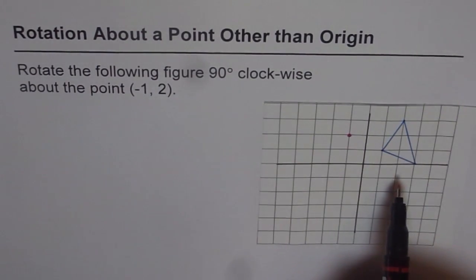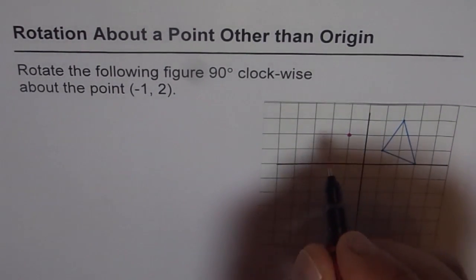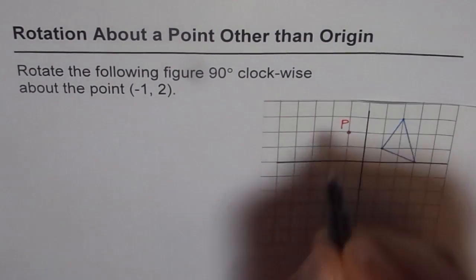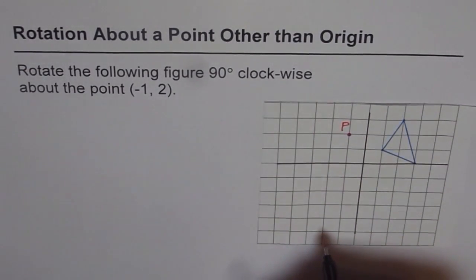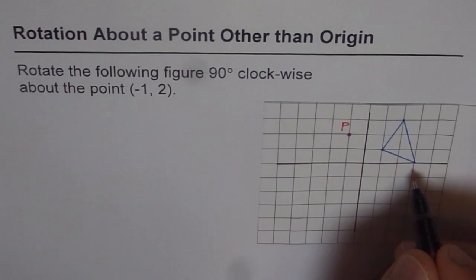So on a coordinate plane, we are given a point, let's call this point as P. And we need to rotate this object and let me label this object as A, B and C.